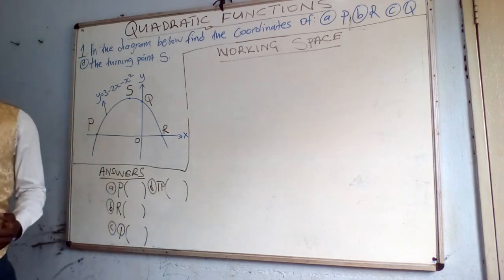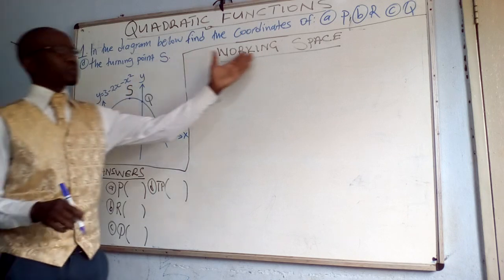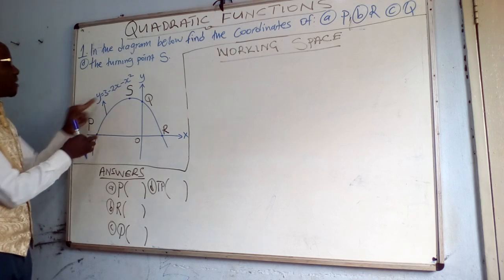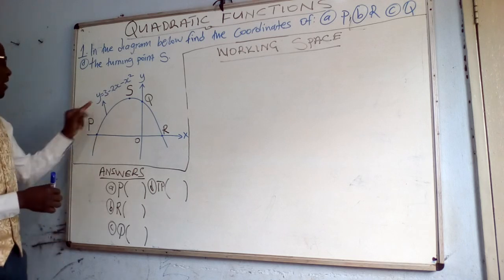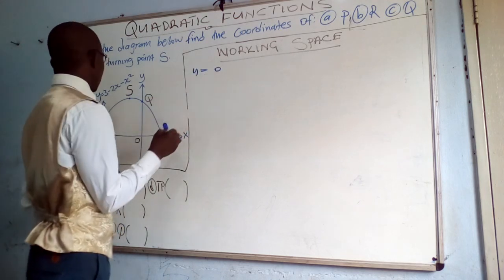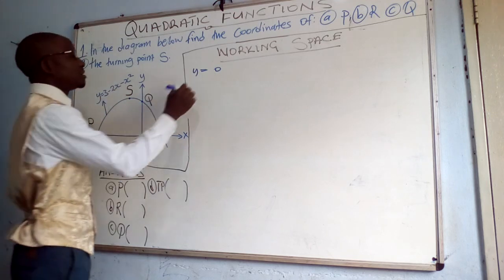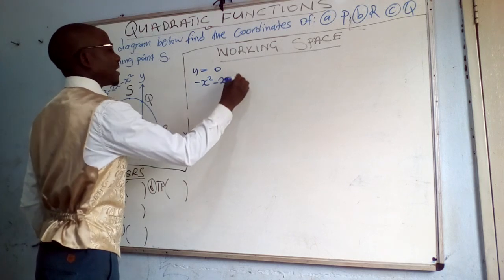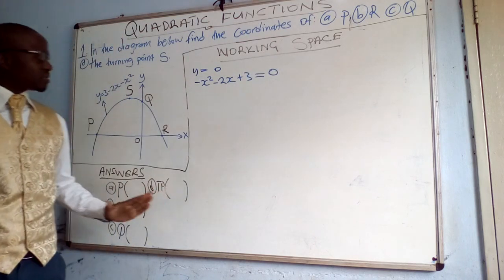Those two can actually be answered simultaneously. If y is equal to 0, meaning that this equation can be equated to 0, we say y is equal to 0. Our equation will be a quadratic equation, hence we have negative x squared minus 2x plus 3 is equal to 0. I had to just rearrange it — nothing changes.